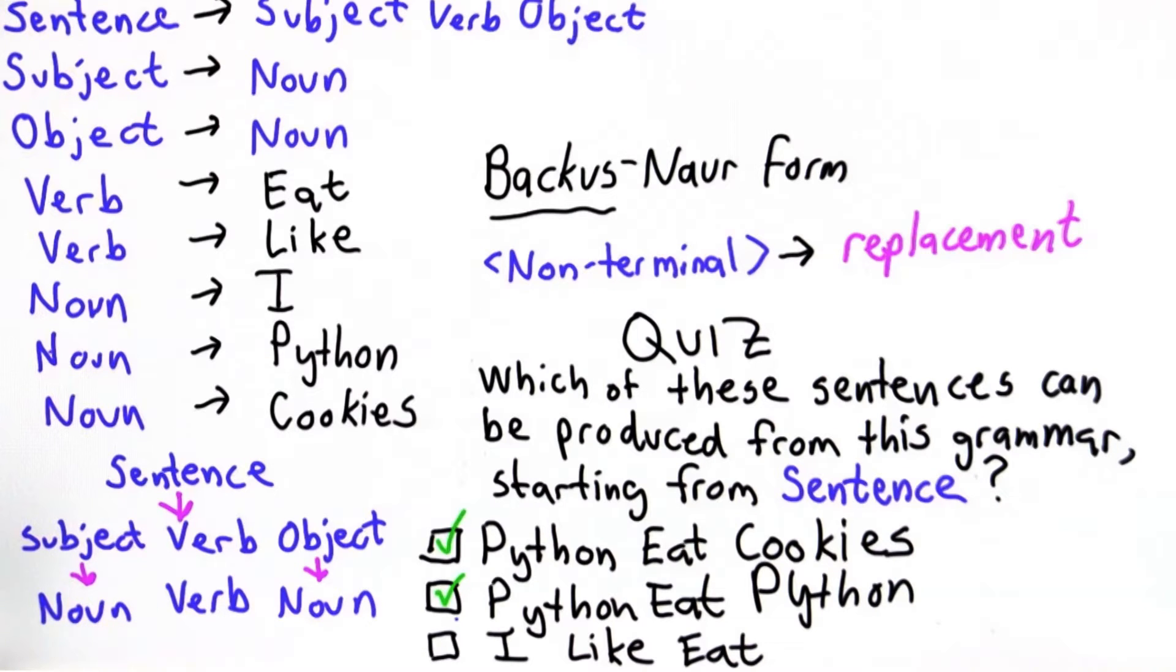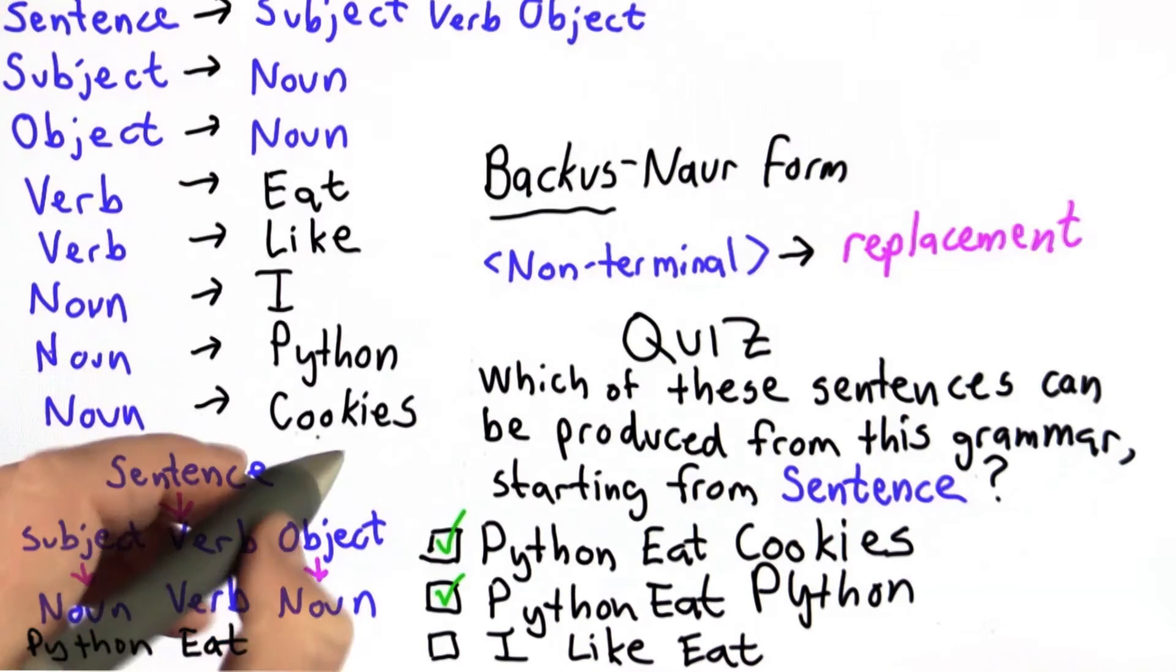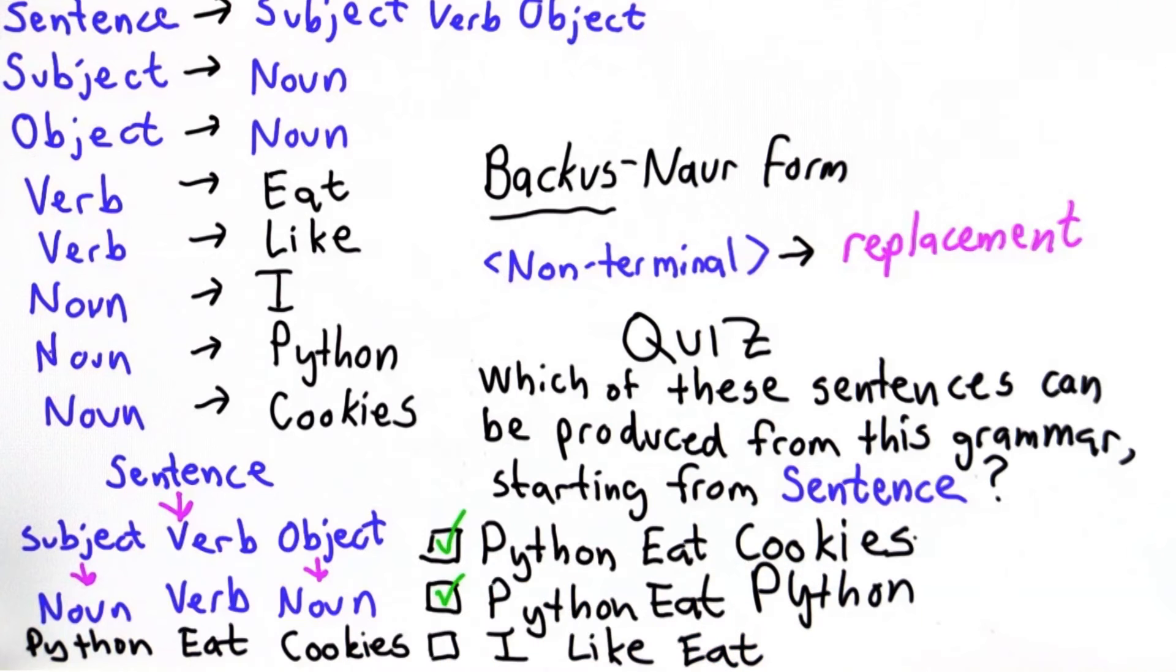From here, we have lots of choices. So we can replace the noun with Python, we can replace the verb with eat, and we can replace the second noun with cookies. That will derive the first sentence.